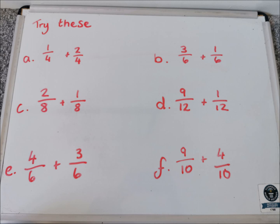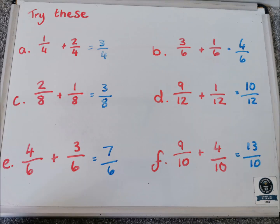Let's have a look at our answers. Hopefully it all made sense. A: one quarter add two quarters is three quarters. B: three sixths add one sixth is four sixths. C: two eighths add one eighth is three eighths. D: nine twelfths add one twelfth is ten twelfths. E: four sixths add three sixths is seven sixths — and there's an example of that numerator being bigger than the denominator, but it doesn't matter, it's still a correct answer. F: nine tenths add four tenths is thirteen tenths — again the numerator is bigger than the denominator, but it's still the correct answer. Well done if this is making sense to you.